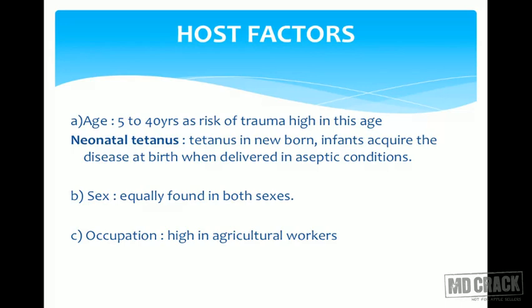Neonatal tetanus is defined as tetanus in the newborn. Infants acquire the disease at birth when delivered in aseptic conditions — there are a lot of unhygienic practices in delivery. One of the worst things is the application of cow dung to the umbilical cord of the baby. This immediately infects the umbilical cord since Clostridium tetani is present in the guts of animals and humans. Fortunately in India, this practice has been severely cut down, so the incidence of neonatal tetanus is also coming down.